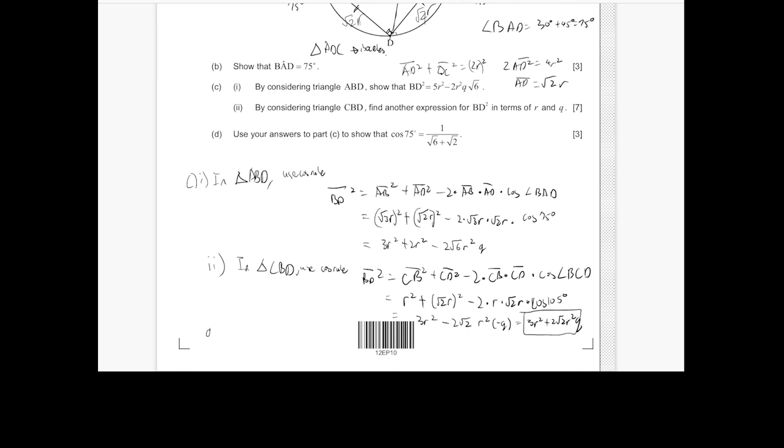And using C1 and C2, so we're trying to find the equation for cosine 75 degrees or Q. So we set this expression equal to this one. So BD squared equals... All right.